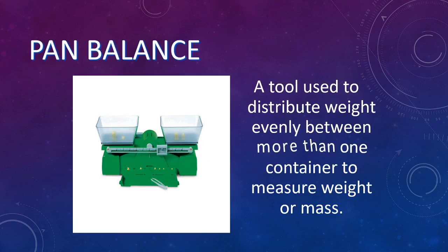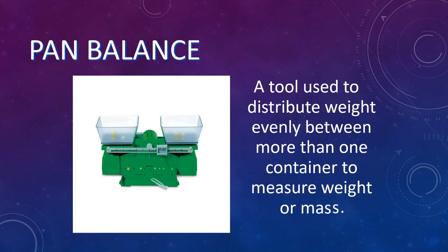A pan balance is used when you are trying to measure and compare two different things and you want to get them evenly weighted. You would put them on both sides until they are balanced together.